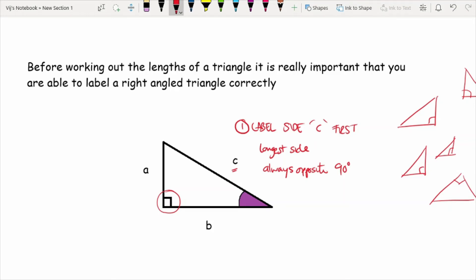Now, your A and B, it doesn't really matter, could be labeled in any order. So on the diagram, the height of the triangle is labeled as A. But I could easily have called that B and easily have called the base of that triangle A.